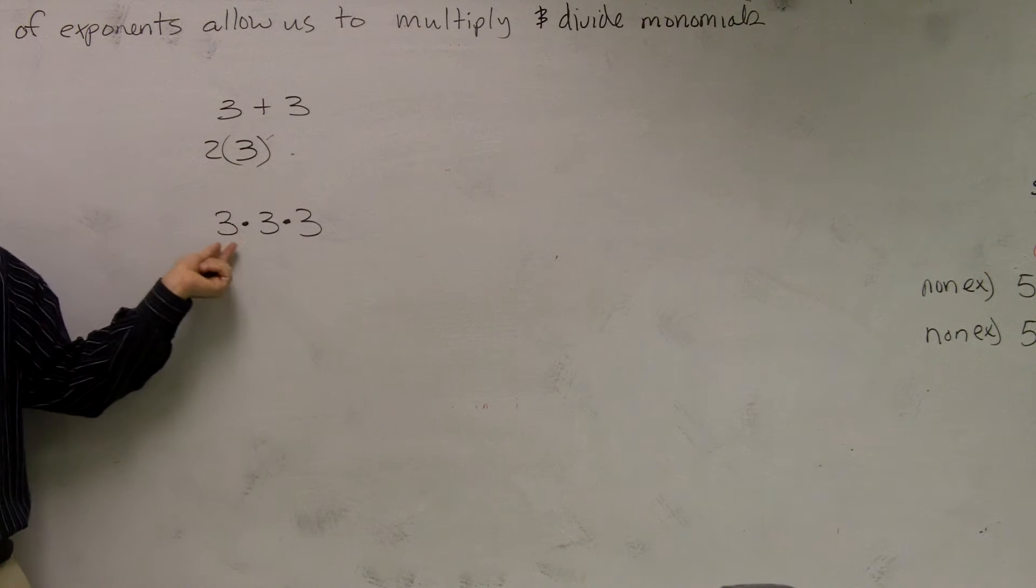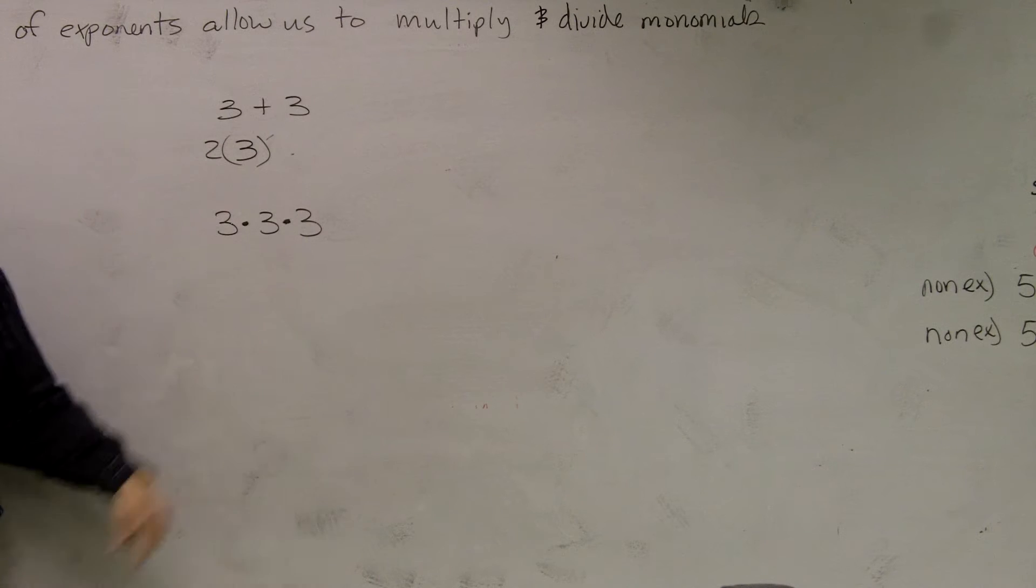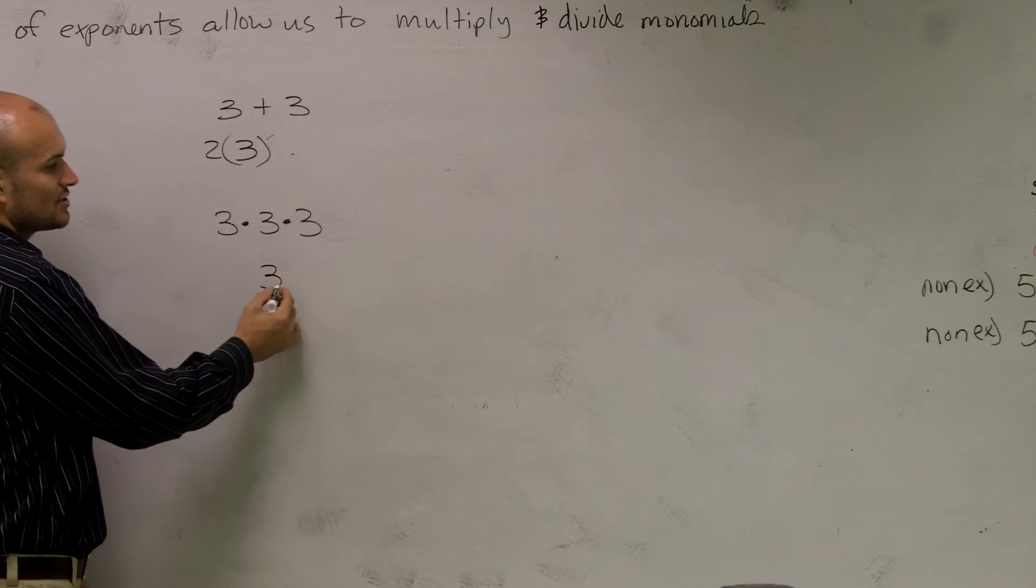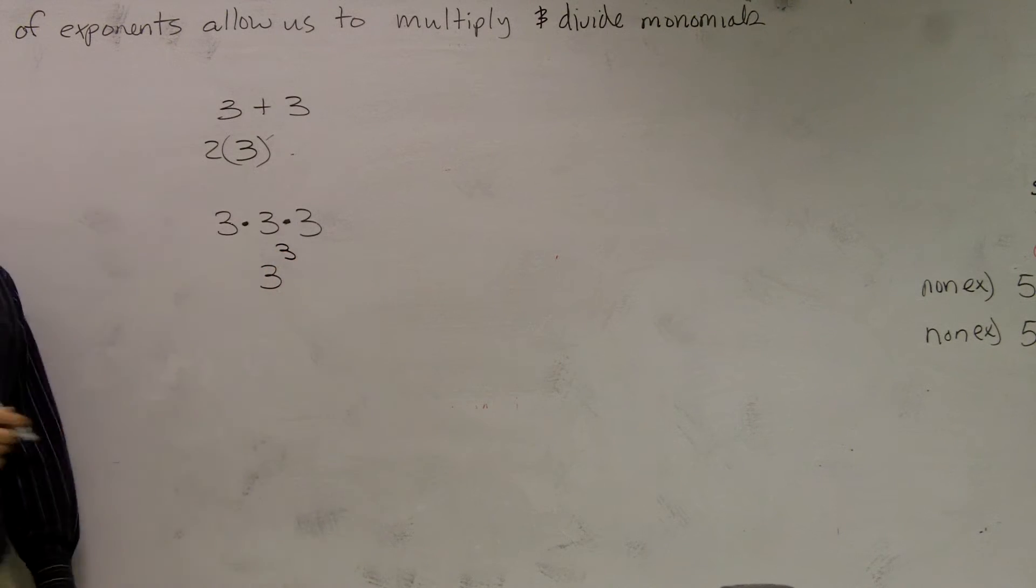So, a way to simplify this, we say, well, list how many times you're multiplying your same number by itself, and that will be your exponent. So what I can now write is 3 raised to the 1, 2, or third power. Okay?